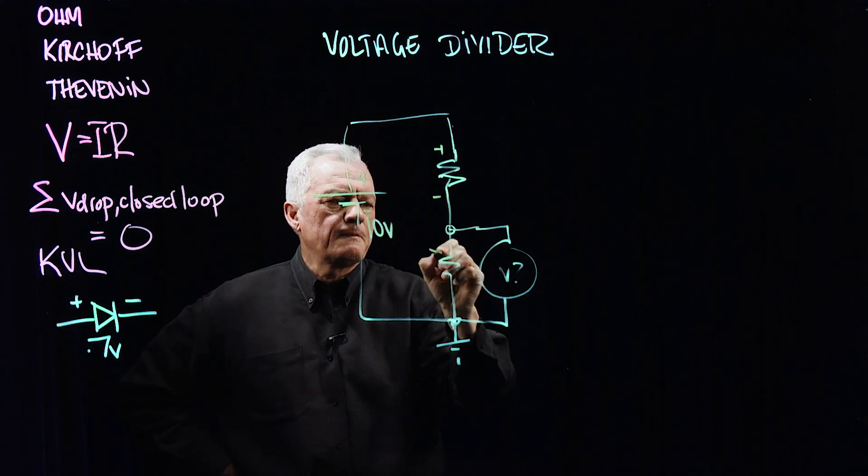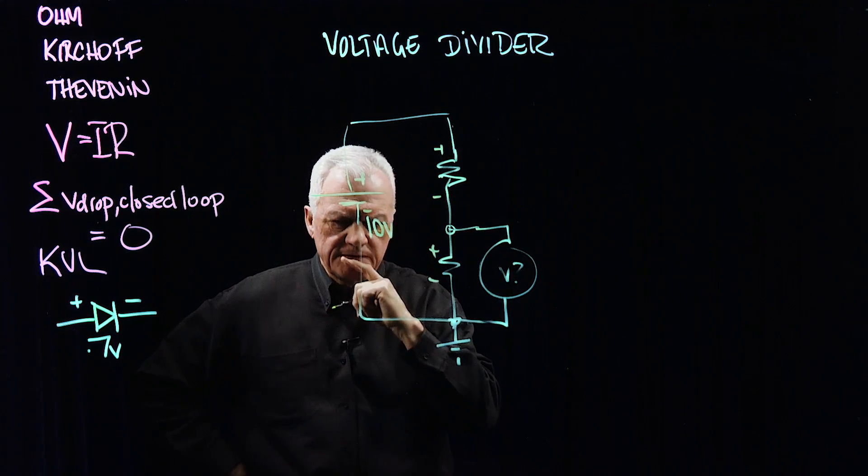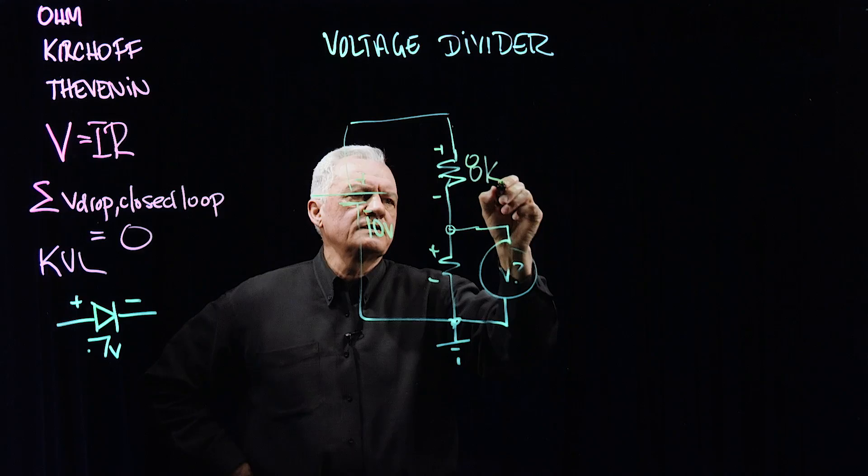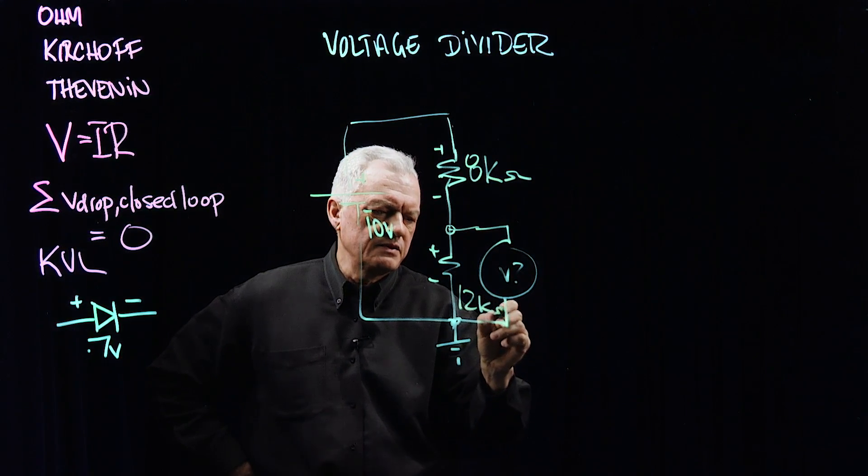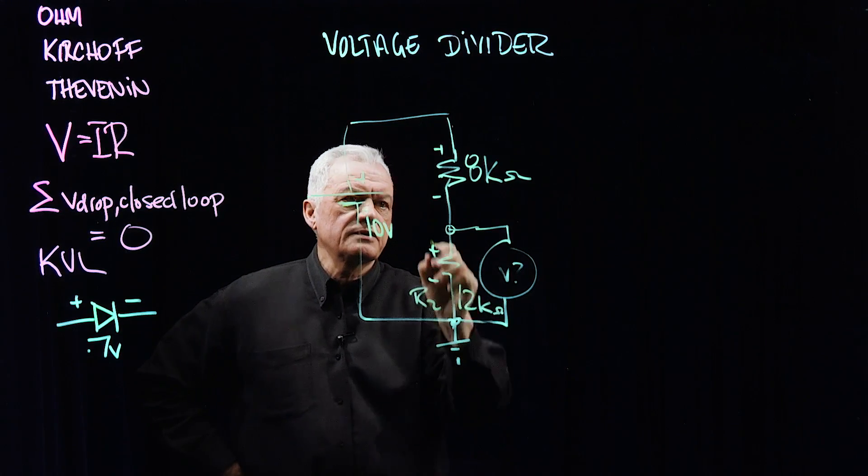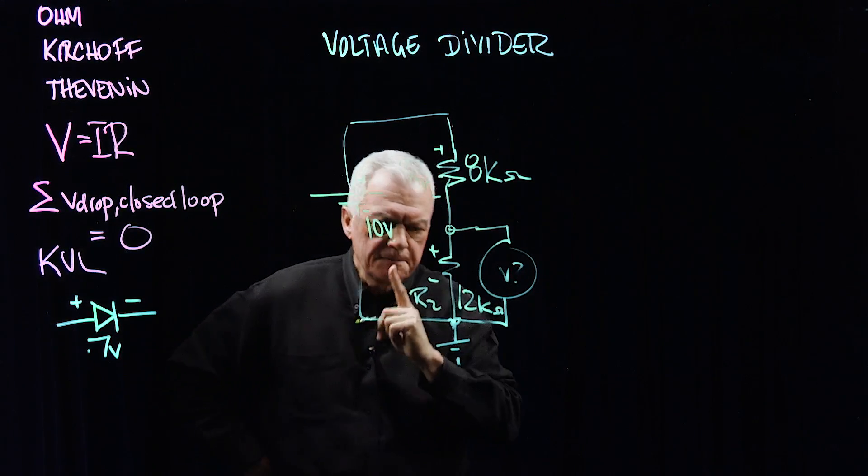Let's take a voltage, how about 10 volts? Let's take two resistors, how about 8K ohms? In this case here, R2, I could make this 12K ohms, just for numbers. Let's call this resistor 2 and this resistor 1.